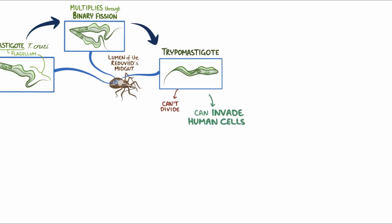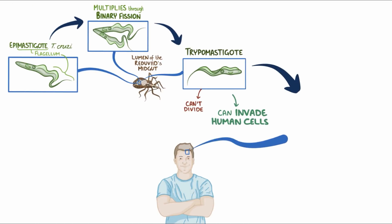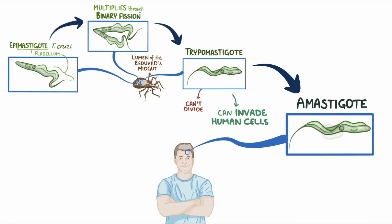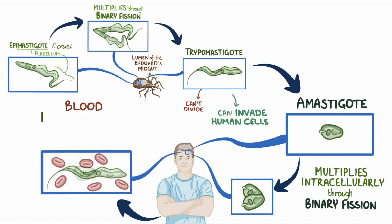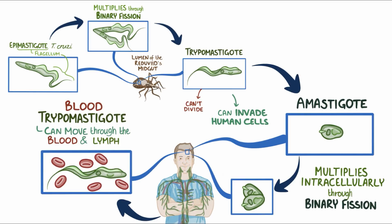Once the tripomastigote invades a human cell, it transforms into an amastigote, meaning that it loses its flagellum. The amastigotes multiply intracellularly through binary fission, and then transform into blood tripomastigotes which can move through the blood and lymph to other tissues. The blood tripomastigotes then invade more cells and turn into amastigotes to multiply intracellularly again, and that's how the cycle goes.